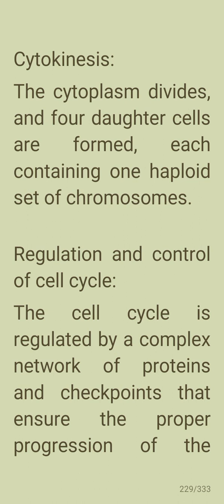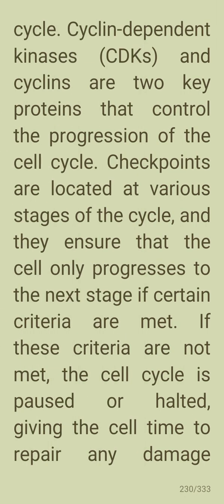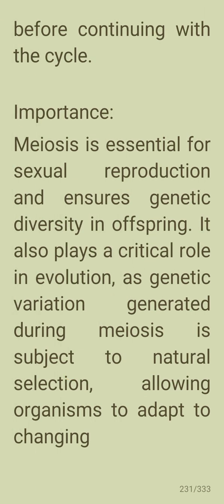The cell cycle is regulated by a complex network of proteins and checkpoints that ensure proper progression. Cyclin-dependent kinases (CDKs) and cyclins are two key proteins that control this progression. Checkpoints are located at various stages of the cycle and ensure the cell only progresses to the next stage if certain criteria are met; if not, the cycle is paused or halted, giving the cell time to repair any damage.